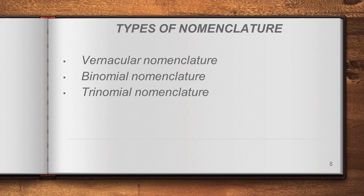There are three types of nomenclature: the first one is vernacular nomenclature, the second is binomial nomenclature, and the third is trinomial nomenclature. Let us see each one in detail.